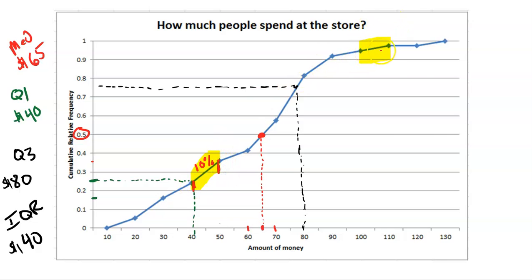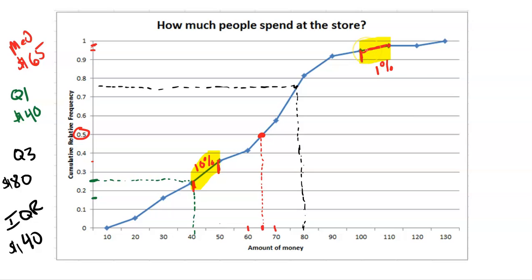Whereas a line that's less steep is going to have less data. For example, $100 is about the 95th percentile and $110 is maybe the 96th percentile. So that's only a 1% change — that means only 1% of people spent between $100 and $110 because there was very little change in between there.